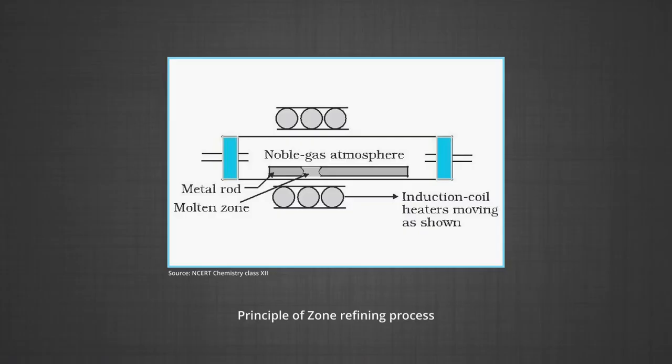The second method is zone refining. This method is based on the principle that the impurities are more soluble in the melt than in the solid state of the metal. A circular mobile heater is fixed at one end of the rod of the impure metal. The molten zone moves along with the heater, which is moved forward.